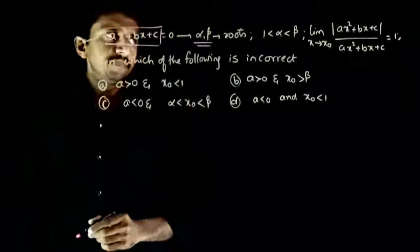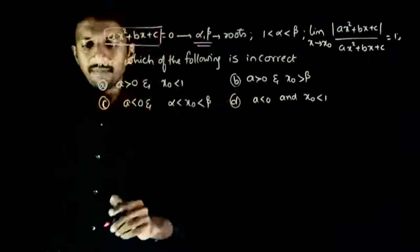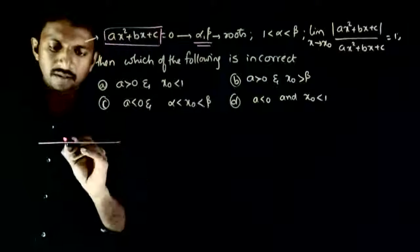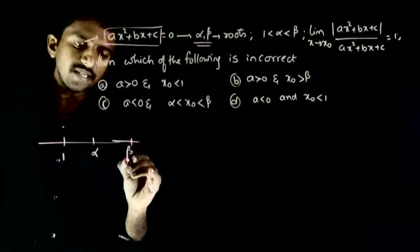with roots alpha and beta, where one is less than alpha less than beta. That is, one is here, alpha is somewhere here, beta is somewhere here.